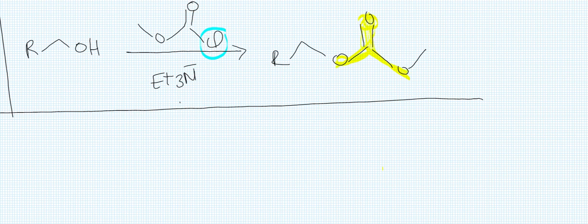So the first step of the mechanism is not going to be an acid-base reaction because the amine is not very strong to grab the hydrogen of the alcohol. So the first step of this reaction is going to be a nucleophilic addition followed by an elimination because we have this Cl, a halide atom, which is a good leaving group.